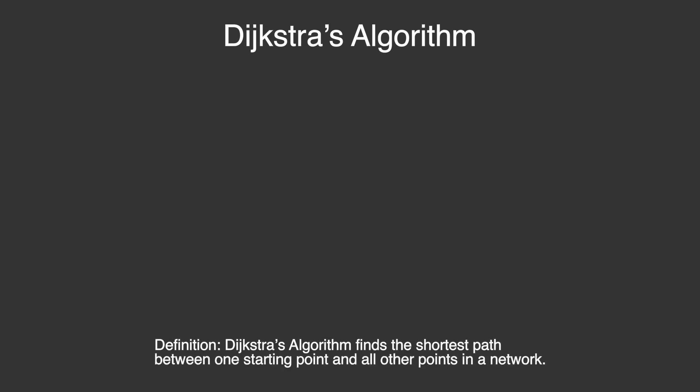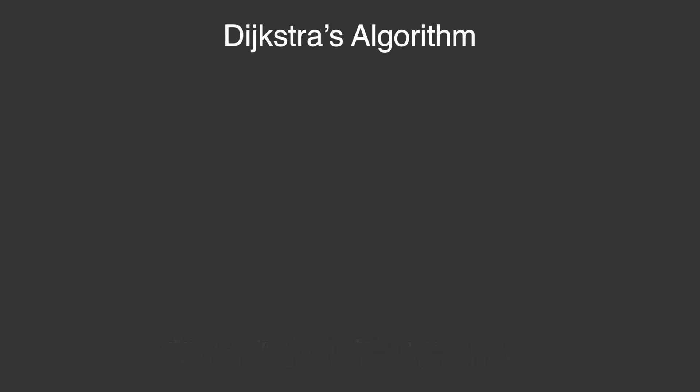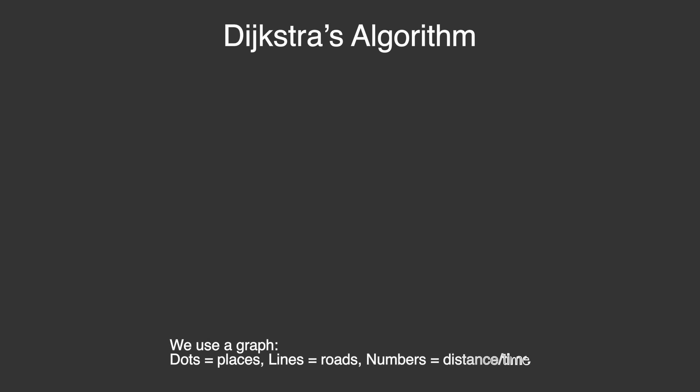In simple terms, it's a method to find the shortest path from one starting point to every other point in a network. Think of a network like a map — dots are places, lines are roads, and the numbers represent distance or time. We start at our chosen location.